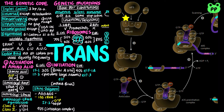EIF1 then binds the E site and recruits the ternary complex consisting of EIF2, GTP, and methionine tRNA, which binds to the 40S subunit, along with GTP-bound EIF5B, which is homologous to IF2, forming the 43S pre-initiation complex.